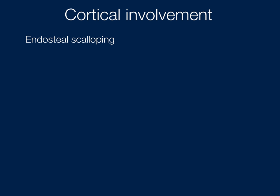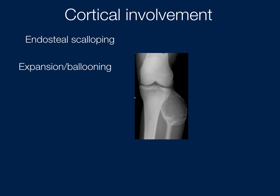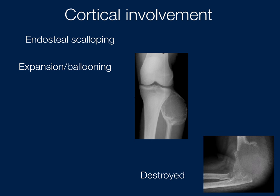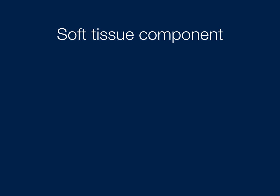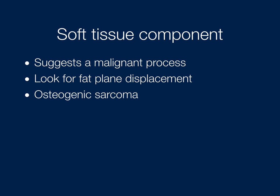Cortical involvement: examples include endosteal scalloping, where the lesion comes from inside the bone and scallops the cortex, or it can expand the cortex causing ballooning with well-defined margins but an expanded cortex. A destroyed cortex suggests a very aggressive lesion — for example, giant cell tumor, which is generally considered benign but can appear aggressive. A soft tissue component is difficult to identify on radiograph but suggests a malignant process; look for fat plane displacement. Osteogenic sarcoma, Ewing sarcoma, and lymphoma can all cause this.